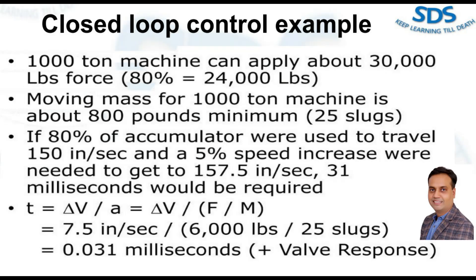In conclusion, this example of closed-loop control in high-pressure die casting examines the calculation of the time required for a speed increase. By considering the force, mass, and desired velocity change, we can estimate the time needed for the machine to reach the target speed. Understanding this calculation helps optimize the control and performance of the HPDC process. Thank you for your attention — if you have any further questions, please feel free to ask and contact us.